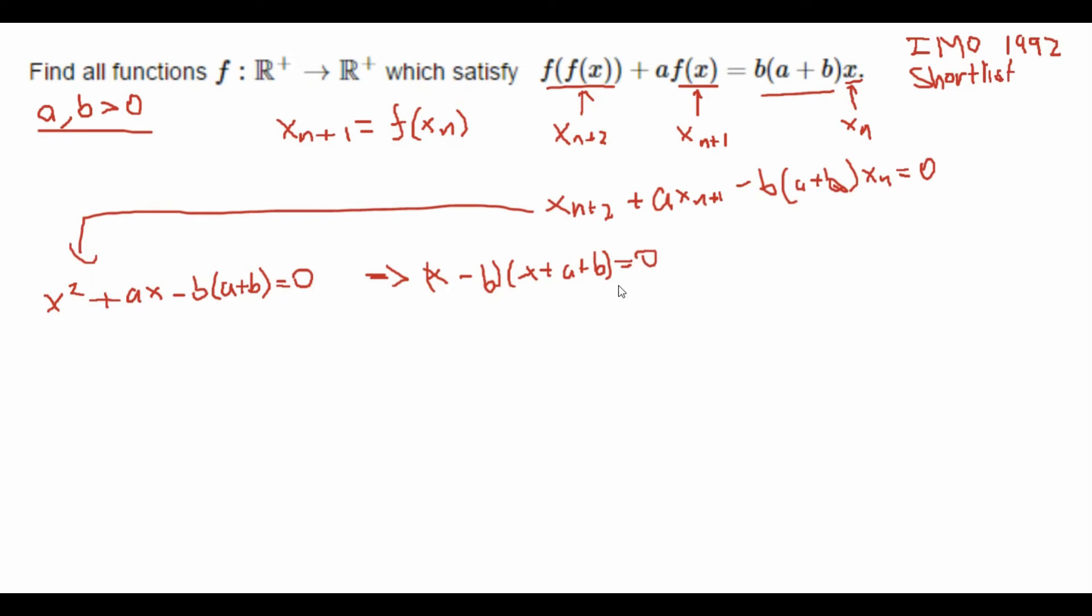Well now that we know it factorizes into these roots, we can easily write the general form of x_n, which is equal to λ₁... that was an ugly lambda. Note that lambda is just like the standard variable we use for solving recurrence relations. It can be like y and z or a and b. We don't want a and b here but it can be like m and n or anything. It's just a standard variable. Don't get confused over why we're using greek letters or something like that.